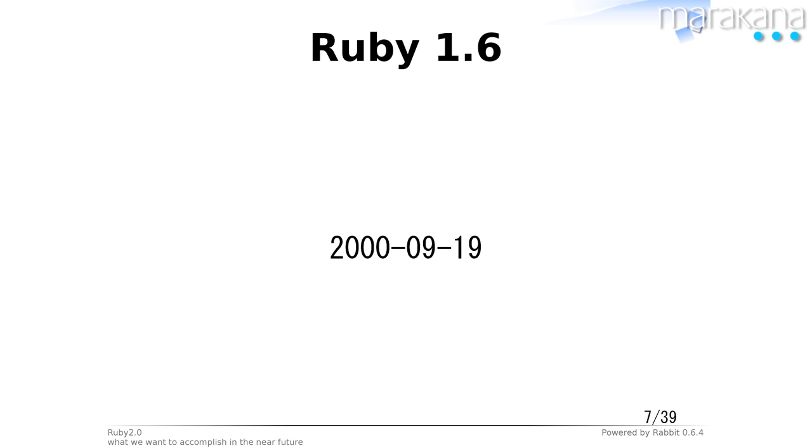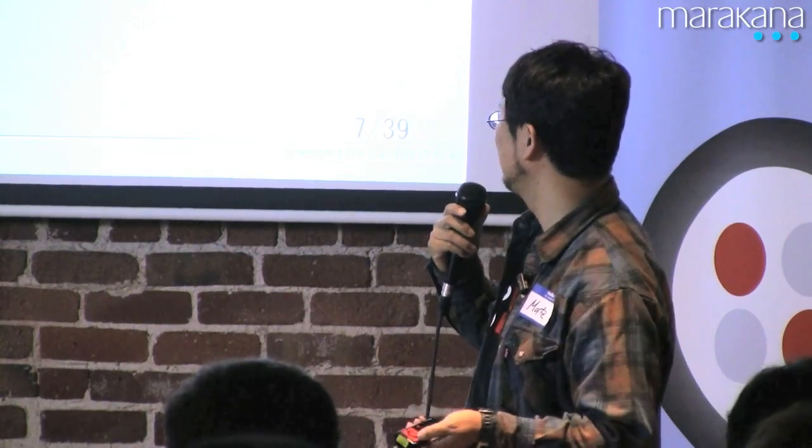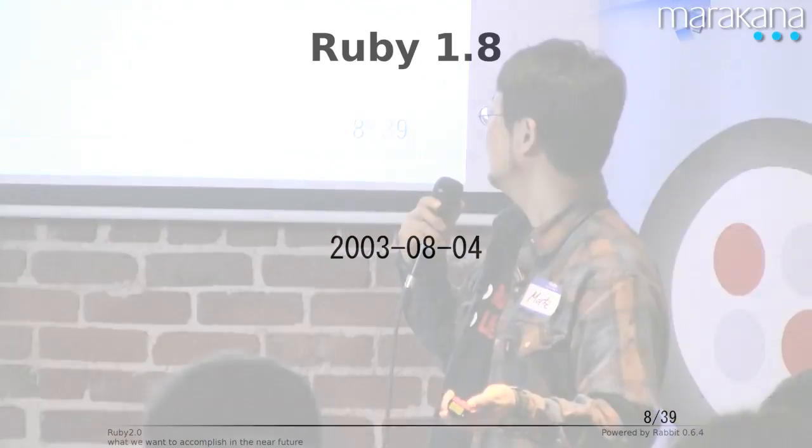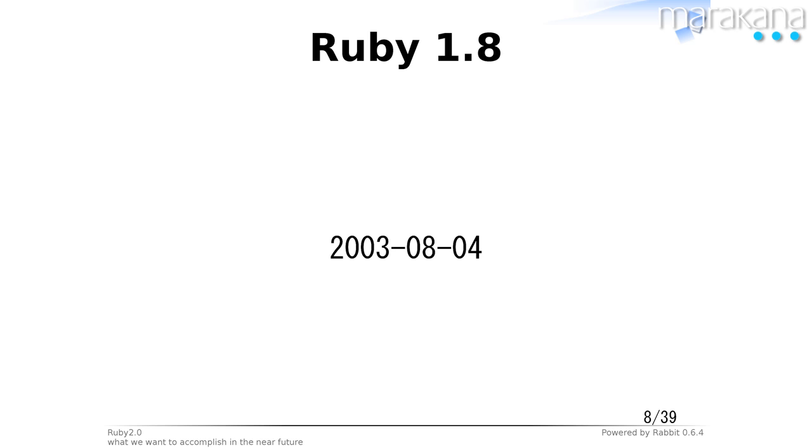For 1.6, I wanted to release it in the middle of summer, but some bugs and troubles got in the way, so it was released on September 19th. Ruby 1.8 was released on August 4th, 2003. Ruby 1.8 was about 7 years old — half the entire history of Ruby was spent in the 1.8 era.